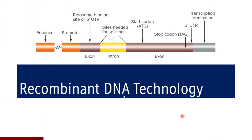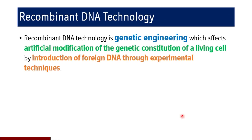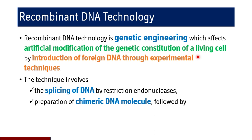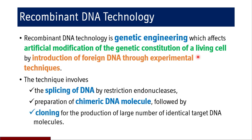So what is recombinant DNA technology? Recombinant DNA technology is a genetic engineering which effects artificial modification of the genetic constitution of a living cell by introducing a foreign DNA through experimental techniques. The techniques involved in recombinant DNA technology are the splicing of DNA by restriction endonucleases, preparation of chimeric DNA molecules, followed by cloning for the production of large numbers of identical target DNA molecules.